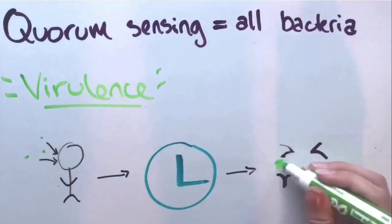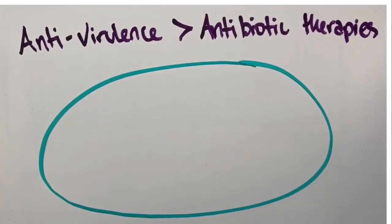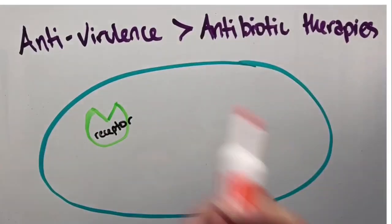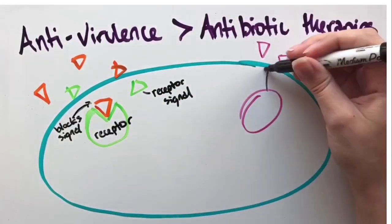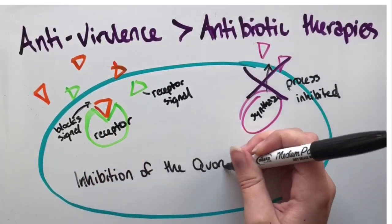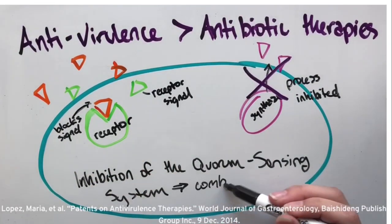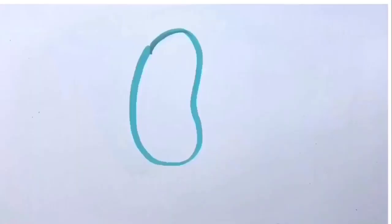While the issue of antibiotic resistance becomes more pressing, more scientists are looking to quorum sensing for the answer. By inhibiting virulence factors like a bacterium's receptor proteins with engineered autoinducers, the bacterium isn't killed as it would be with antibiotics. Instead, these virulence therapies render the cell useless, decreasing the development of resistant strains while preventing infection. Therefore, the future of medicine may lie in a concept billions of years old.